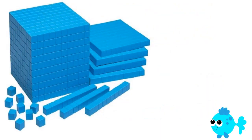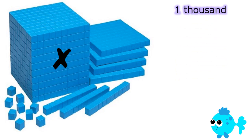Let's take a look at the model on the screen. This model is representing a number. Look at the black X — do you know what this block represents? If you said 1000, you are correct. How many thousand blocks do you see? There is only one, so therefore we have 1000.